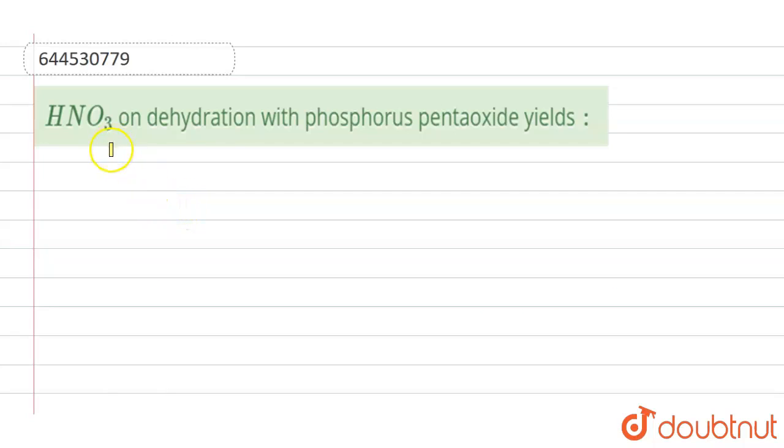So here the question is HNO3 on dehydration with phosphorus pentoxide yields. Okay, so here what happens is our phosphorus pentoxide.